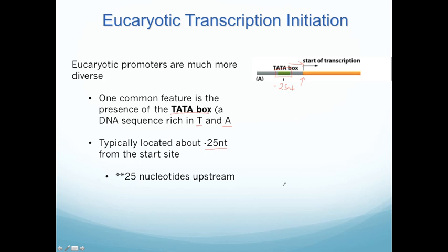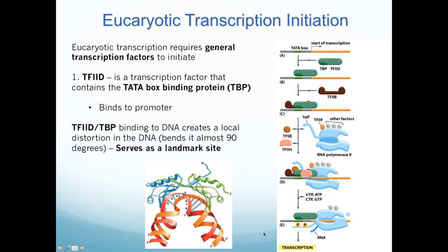Eukaryotic promoters are much more complicated with a lot of variety, so we won't go into all of them in this class. Now, how does transcription start in eukaryotes? There's a four-step process. The general transcription factors are named TF2s, which stands for transcription factors for RNA polymerase 2. Each transcription factor is called TF2 followed by a letter — A through H or so — to distinguish them from each other.